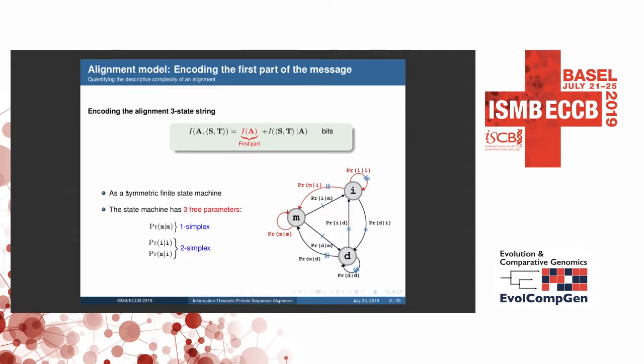So now I will look at how do we encode these alignment model parts. The first part is encoding the hypothesis itself. And as you can remember, this can be viewed as a three-state string over matches, insertions, and deletions. And therefore, we can view it as a finite-state machine of nine-state transition probabilities associated. And also, we have some properties involved. There is a symmetry where we treat insertions and deletions symmetrically. And also, for each state, the outgoing edges have to add to one, ensuring their probabilities. And this brings down the finite-state machine into having only three free parameters.